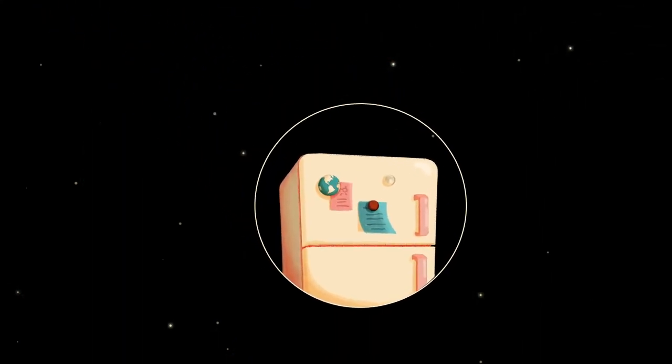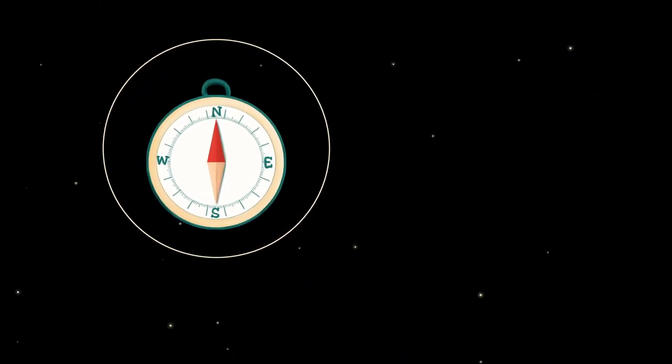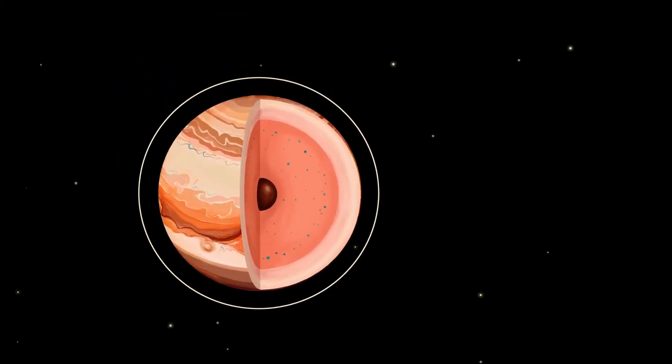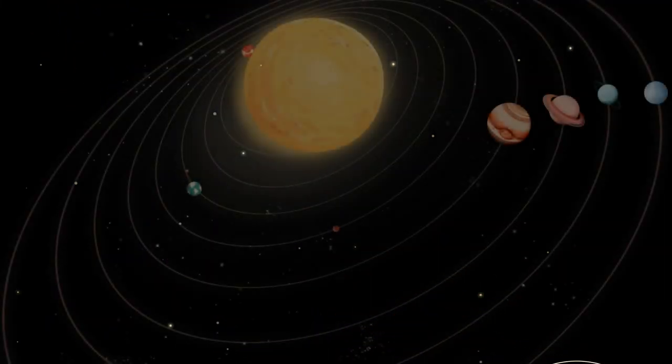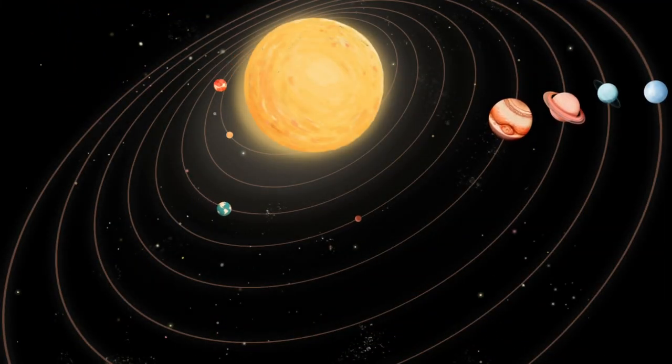From fridge magnets to compasses to the deep interior of Jupiter, magnetism is at work in our solar system, shaping our daily experiences.